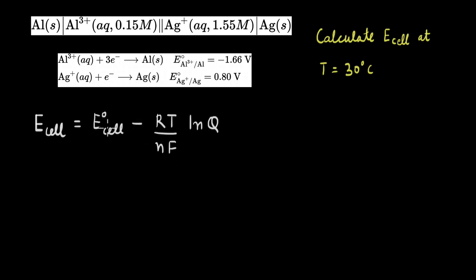where E naught cell is the standard cell potential, R is the universal gas constant, T is the temperature in Kelvin, n F is the charge transferred, and Q is the reaction quotient.